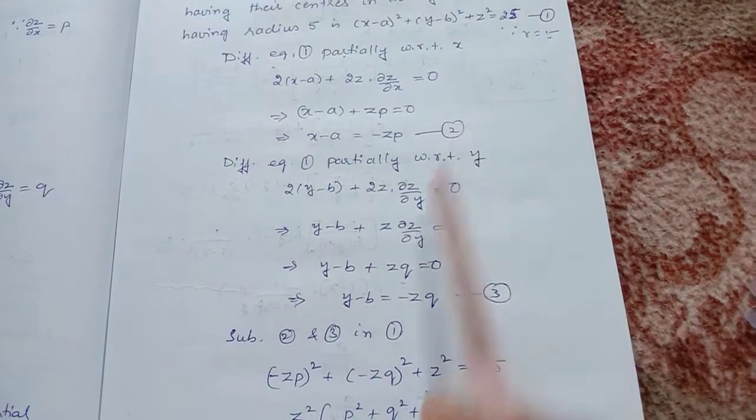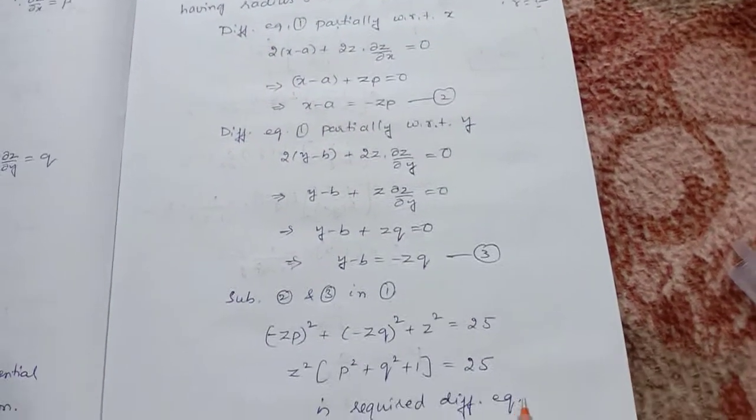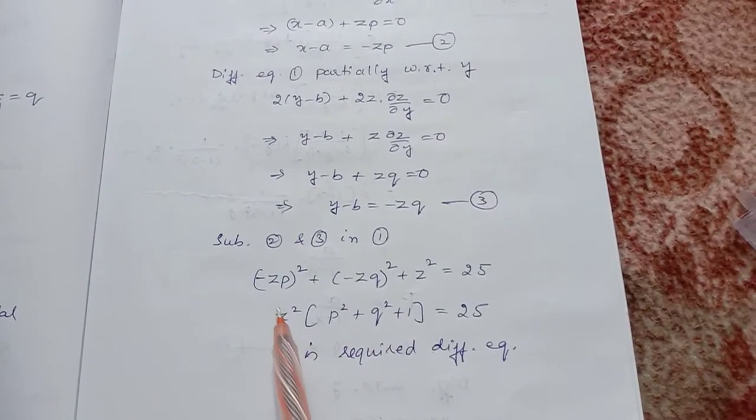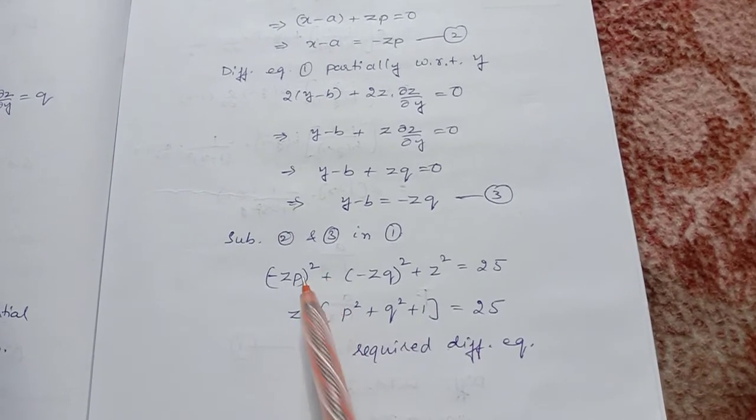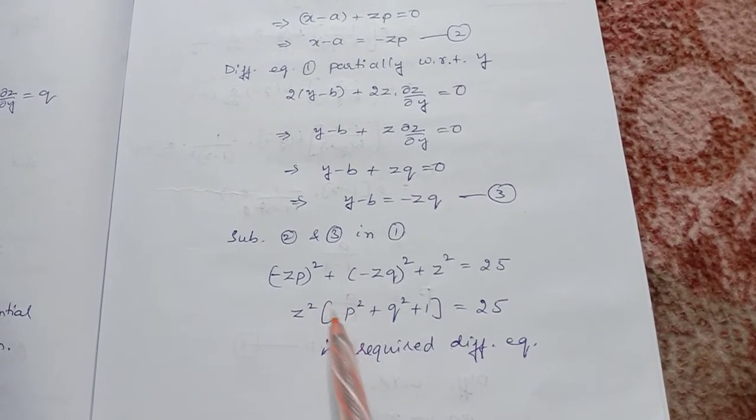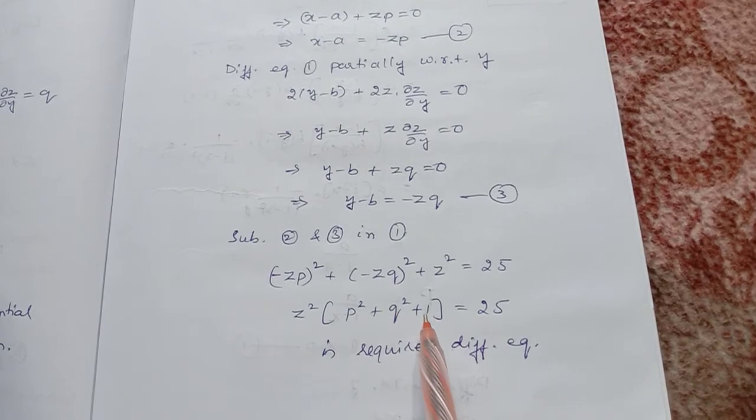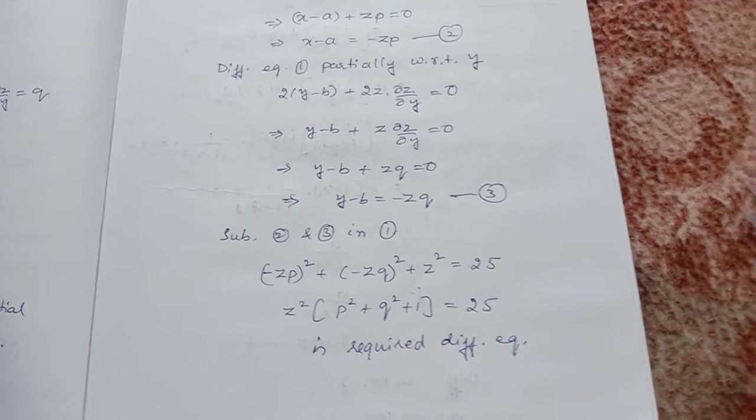plus z² equal to 25. Taking z² common, we have z²(p² + q² + 1) equal to 25, which is the required differential equation.